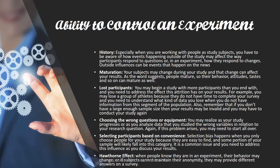Your ability to control an experiment — the list we have here expresses some of the outside influences that affect your ability to control an experiment. A thorough conclusion will address these influences and explain how they impacted the variables in the study as well as your results. Especially when you're working with people as study subjects, you have to be aware of how events happening outside of the study may affect participants' responses to questions in an experiment or how they respond to changes. Outside influences can even be events that happen in the news.